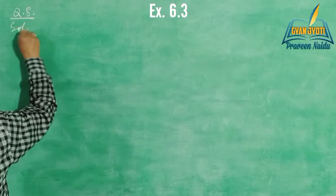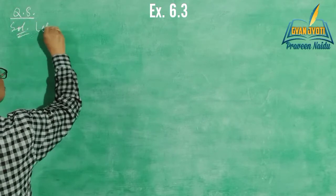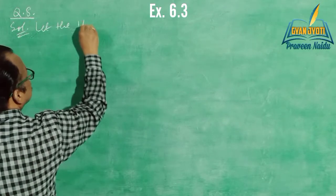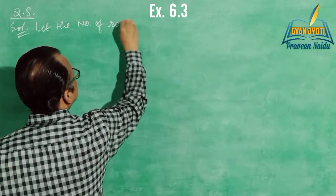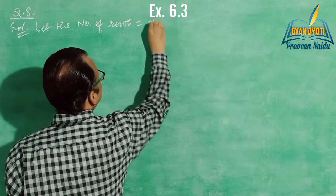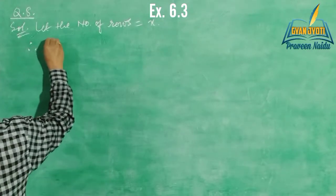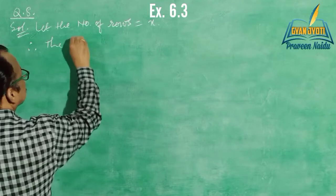Exercise 6.3, question number 8. In this question it is given that the number of rows and the number of plants in each row are equal. So let the number of rows be x.